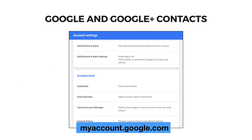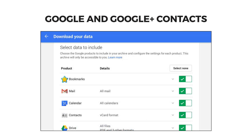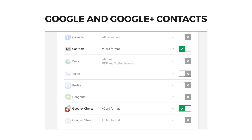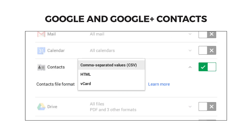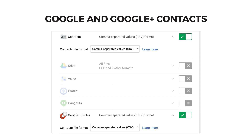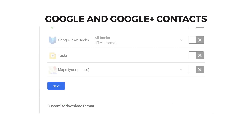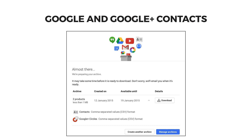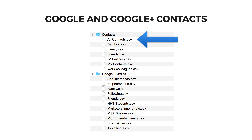To get your Google and Google Plus contacts, go to myaccount.google.com and log in if you're not already. In account settings, look for the account tools area and then download data. Click select none and then check contacts and Google Plus circles. Click the little drop-down arrow to change the data from a vcard to a CSV file for both types of data. At the bottom of the page click next, choose the zip file format for your archive, and click create archive. Download the file when it's ready and look for the all contacts CSV file in your contacts folder and the various CSV files of the circles you've created inside the Google Plus circles folder.